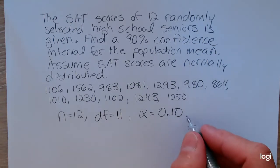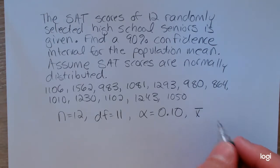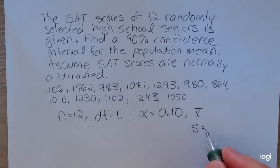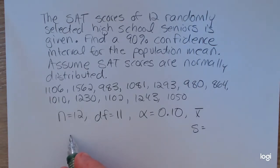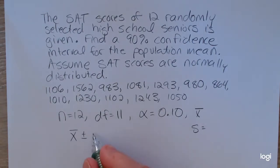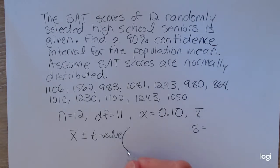And we're also going to need x-bar and we'll find that in a minute. And we'll need S. So we'll need the sample mean and the sample standard deviation. So the formula for the confidence interval will be x-bar plus or minus that critical value from the T table. So I'll just write that T value. And I'll go over again how to find that. Times S over the square root of N.